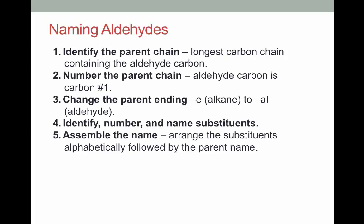We're going to take a look at the IUPAC nomenclature of aldehydes, which is really based off of what you've previously learned for naming other acyclic compounds. The basics are as follows: we'll identify the parent chain, which is the longest carbon chain that contains the aldehyde carbon. Then we'll number that parent chain setting the aldehyde carbon to number one. We'll change the parent ending — if it was an alkane with an E ending, we'll change that to AL to designate the aldehyde functional group. We'll identify, number, and name our substituents, then assemble the name by alphabetizing the substituents and following it by the parent.